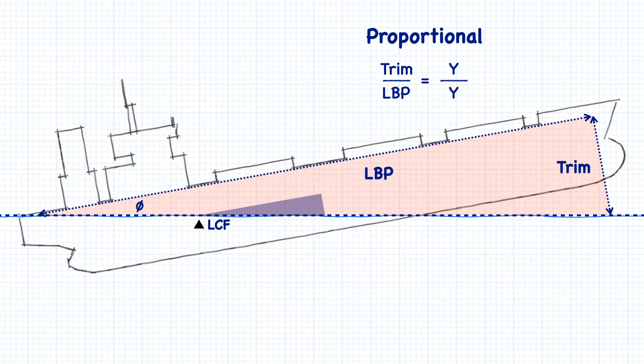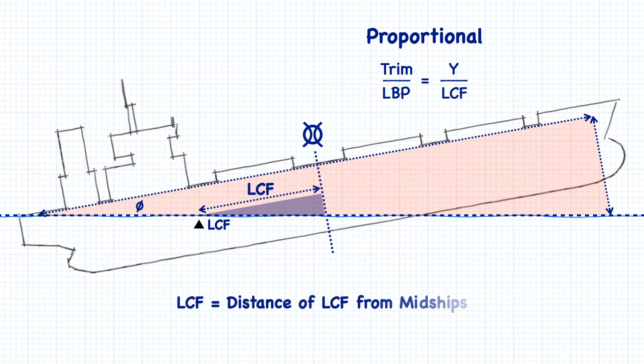This larger triangle has the same proportions as this smaller triangle, where one side is the center of flotation's distance from midships, and the other side is the correction that we apply to our mean draft.